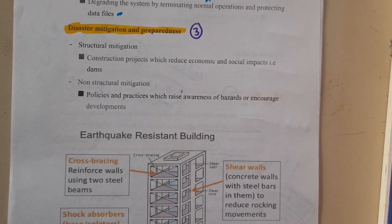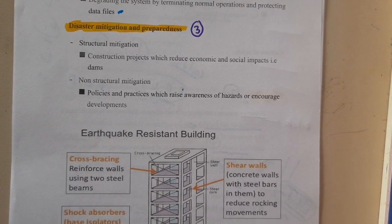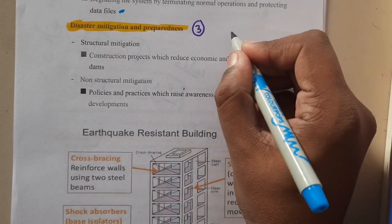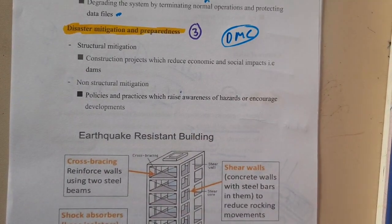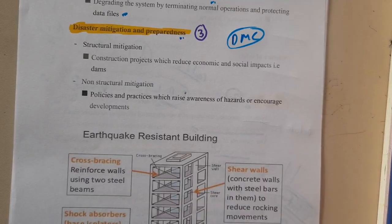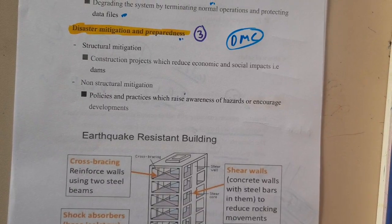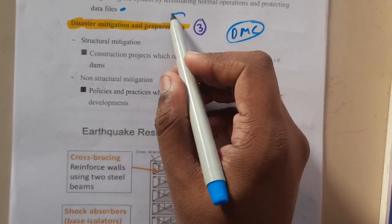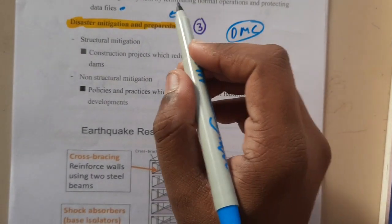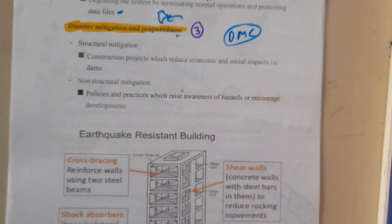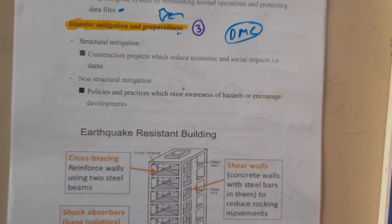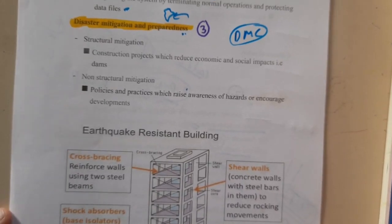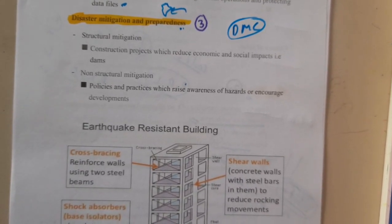Hello, we are back with our next lecture. In this lecture, let us go through disaster mitigation and preparedness. If you watched the previous lectures, we discussed the disaster management cycle. Disaster mitigation and preparedness are the steps which are taken before the occurrence of a disaster, and these are used to avoid or prevent the disaster.